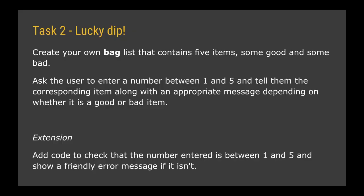Time for your second task. You're going to create a sort of lucky dip program. Create your own bag list that contains five items — I want some of those to be good and some of them bad. Then ask the user to enter a number between one and five and tell them the corresponding item along with an appropriate message depending on whether that item is a good or bad one. You'll need to remember the zero indexing and the need to subtract one from whatever they type in, and use an if-else statement to test whether the item is good or bad. If you want to push yourself, add code to check that the number entered is between one and five and show a friendly error message if it isn't — otherwise your program will crash in a rather unpleasant red font.